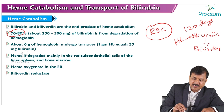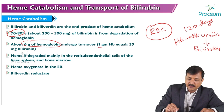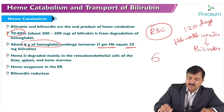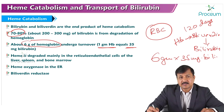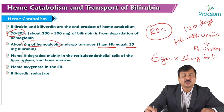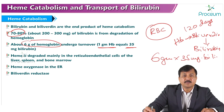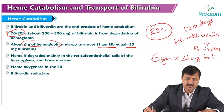About 6 grams of hemoglobin undergoes turnover every day. Each gram of hemoglobin produces about 35 milligrams of bilirubin. So 6 grams times 35 milligrams contributes around 200 to 300 milligrams of bilirubin made per day. This is the amount coming from hemoglobin degradation. All other heme-containing proteins also undergo degradation when their half-life is complete.